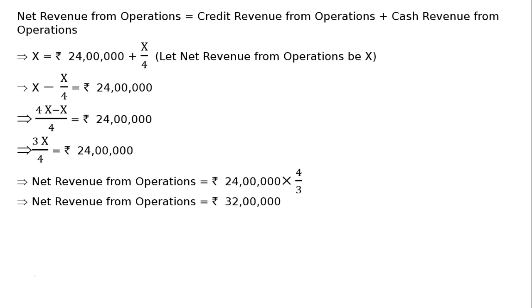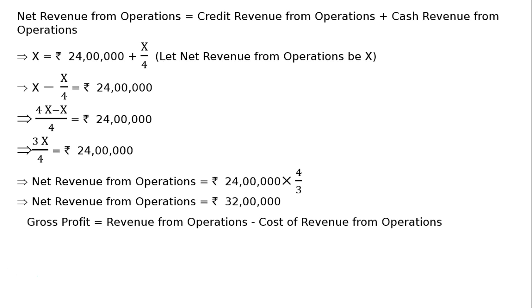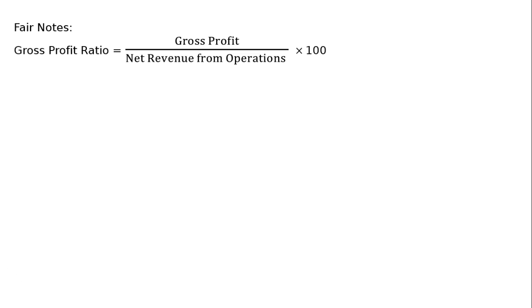Gross profit equals revenue from operations minus cost of revenue from operations, that is rupees 32 lakhs minus rupees 25,60,000, equals rupees 6,40,000. Now gross profit ratio equals gross profit upon net revenue from operations into 100, that is rupees 6,40,000 upon rupees 32,00,000 into 100, which equals 20 percent. So gross profit ratio is 20 percent.